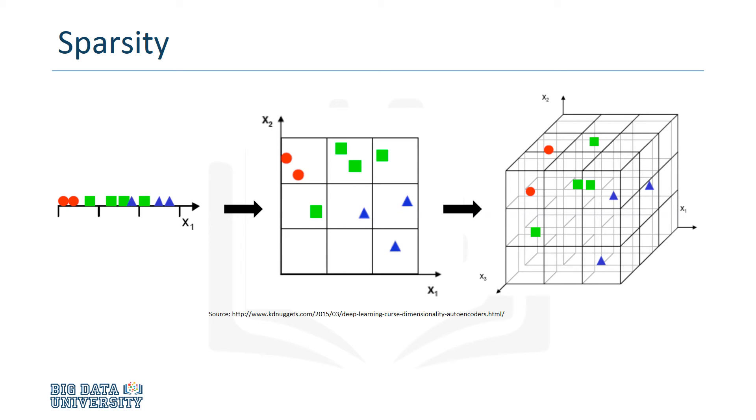Overlap and sparsity make it difficult to determine the underlying patterns. But with the proper number of dimensions, the patterns are much clearer.